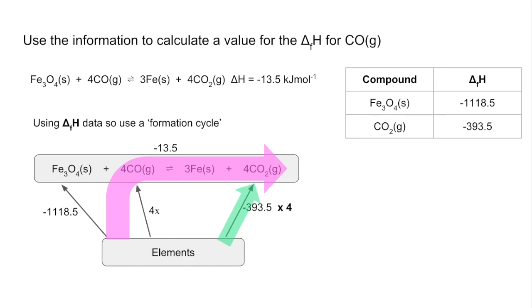So Hess's law says that the sum of the enthalpy changes in the two roots equal each other. So essentially the sum of the pink root equals the sum of the green root and then all we need to do is rearrange for 4x and solve for x.